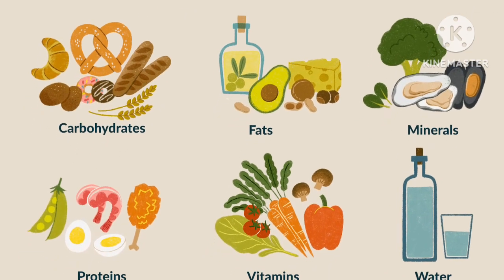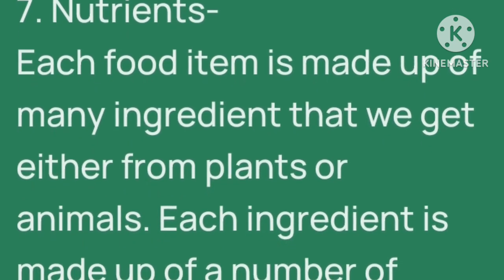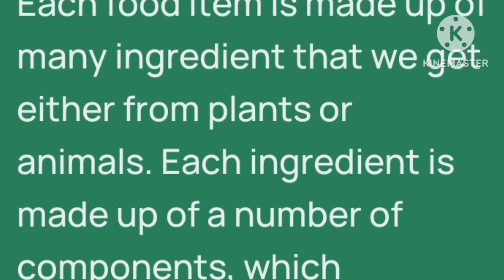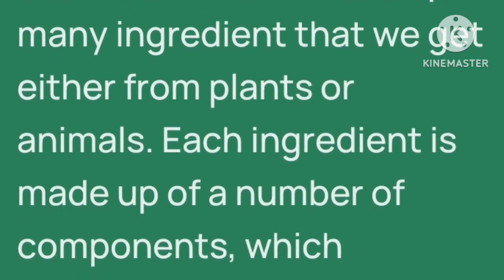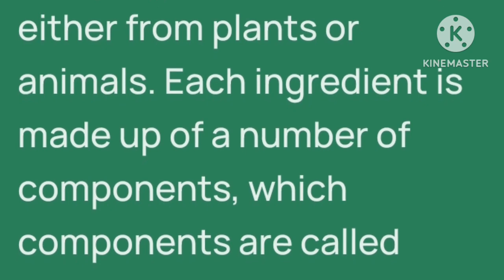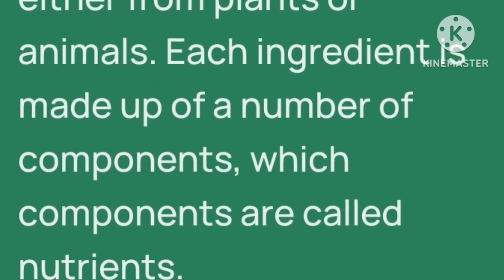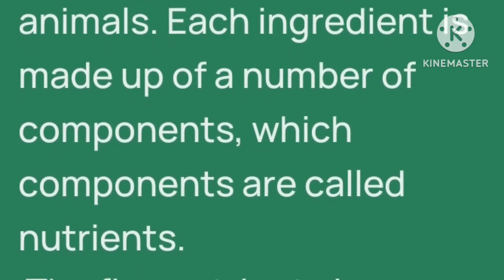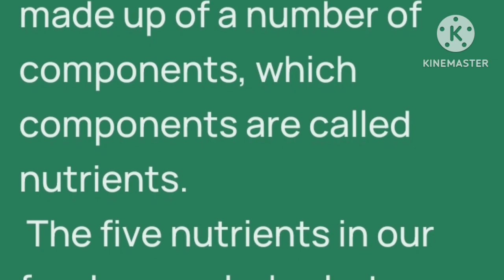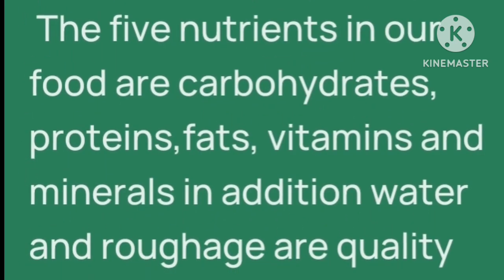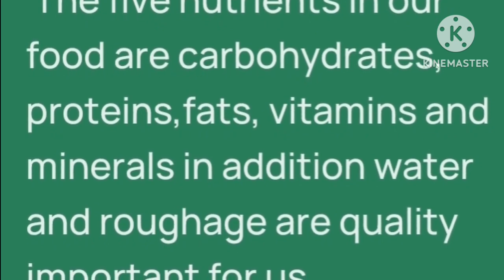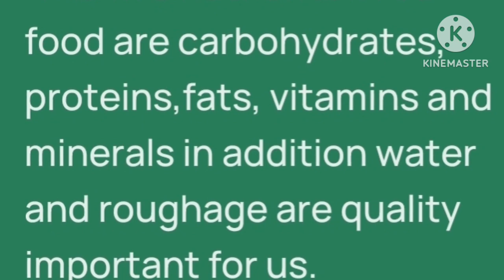7th number: nutrients. Each food item is made up of many ingredients that we get either from plants or animals. Each ingredient is made up of a number of components, which components are called nutrients. The five nutrients in our food are carbohydrates, proteins, fats, vitamins and minerals. And in addition, water and roughage are also important for us.